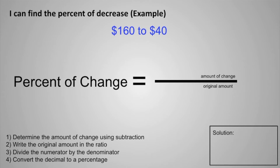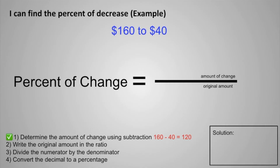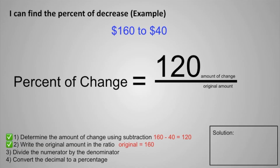This next example is going to focus on a percent of decrease. Step one is to determine the amount of change using subtraction. The problem reads $160 to $40. To find the amount of change, we take 160 and subtract 40, which equals 120. We put 120 as the numerator because it is the amount of change. Step two: write the original amount in the ratio. The first value given to us is 160, so the original amount will be 160. We place this number in the denominator because it represents the original amount.